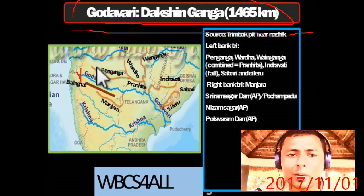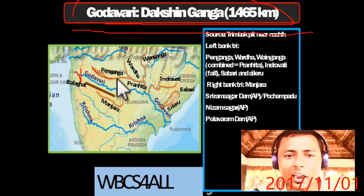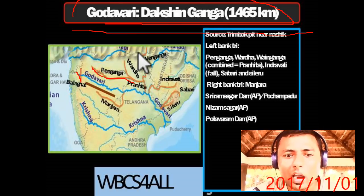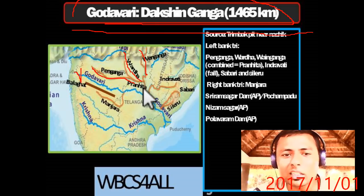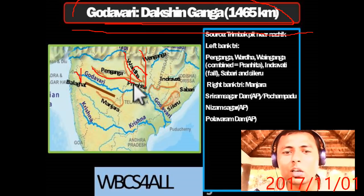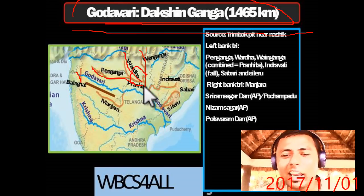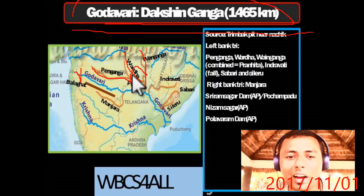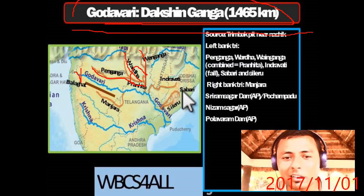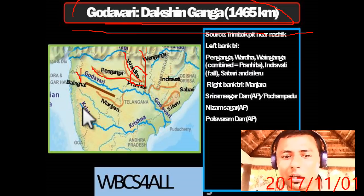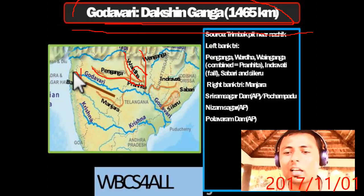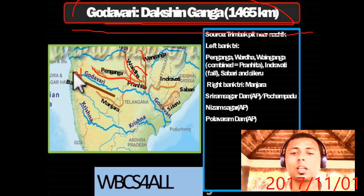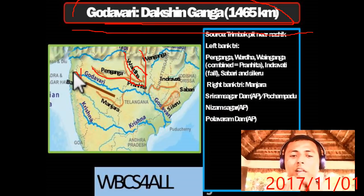Left bank tributaries of Godavari include Penganga, Wardha, and Wainganga — when these three meet they become Pranhita. Remember that Godavari is a feminine name and all its tributaries are also feminine names: Penganga, Wardha, Wainganga, Indravati, Sabari, Sileru, Manjira, and Balgat. This is a helpful trick to remember Godavari's tributaries.